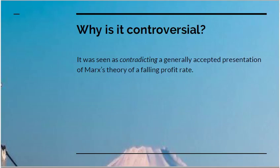Why is this a controversial point? It was seen as contradicting a certain generally accepted presentation of Marx's theory of the falling rate of profit. However, if you read Capital carefully, you'll see that this is not the only argument for a falling rate of profit that Marx gives. He gives one which is a technological argument and one associated with the rate of accumulation. And whilst Okishio may have damaged the technological argument, he has reinforced Marx's argument associated with the rate of accumulation, as I'll show you.